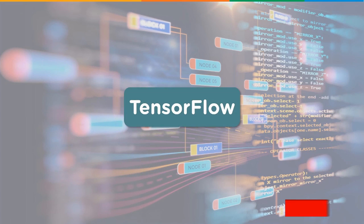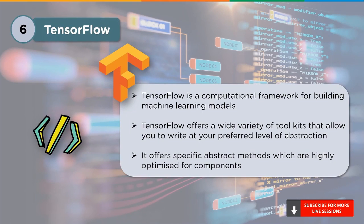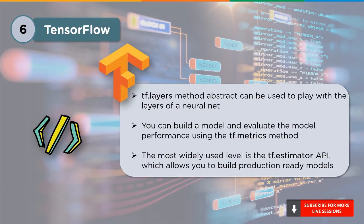At number 6, we have TensorFlow. TensorFlow is a computational framework created in 2017 for building machine learning models. It offers toolkits to write code at your preferred level of abstraction and allows abstract models highly optimized for components. Some of these methods include tf.layers to work with the layers of a neural net, tf.metrics to evaluate model performance, and tf.estimator to build production-ready models. All in all, TensorFlow is a commonly used programming language and is recommended for people who have a good grasp of it.